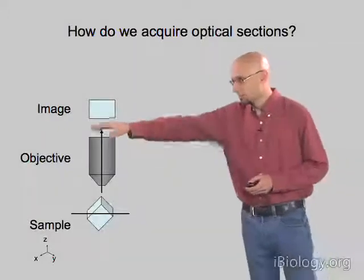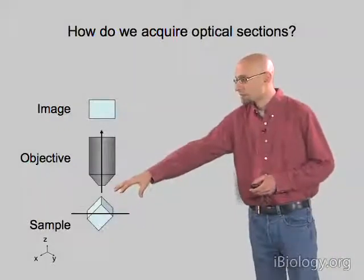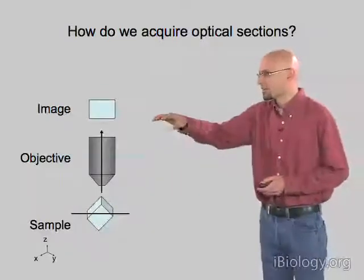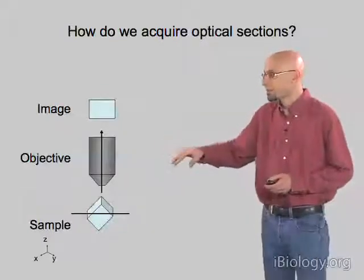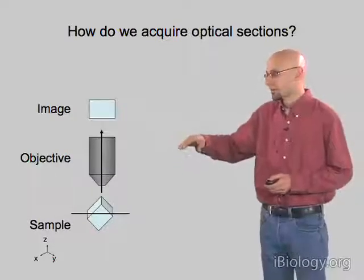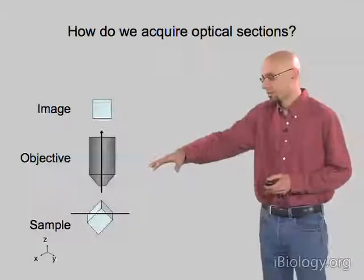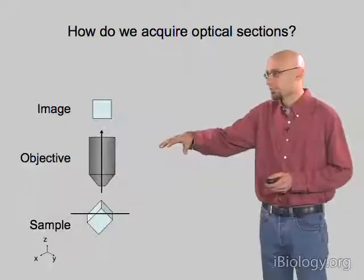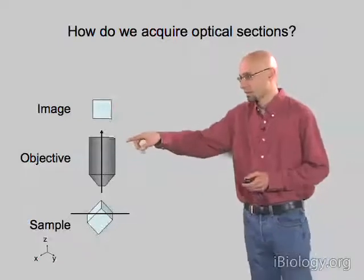We have our sample here illustrated by this little cube. We take a picture of it, and we get a slice through the sample, which looks like this rectangle. We then step the focus — we physically move the sample down, away from the objective, to get a second slice through a different portion of our little cube. So we get a smaller rectangle.